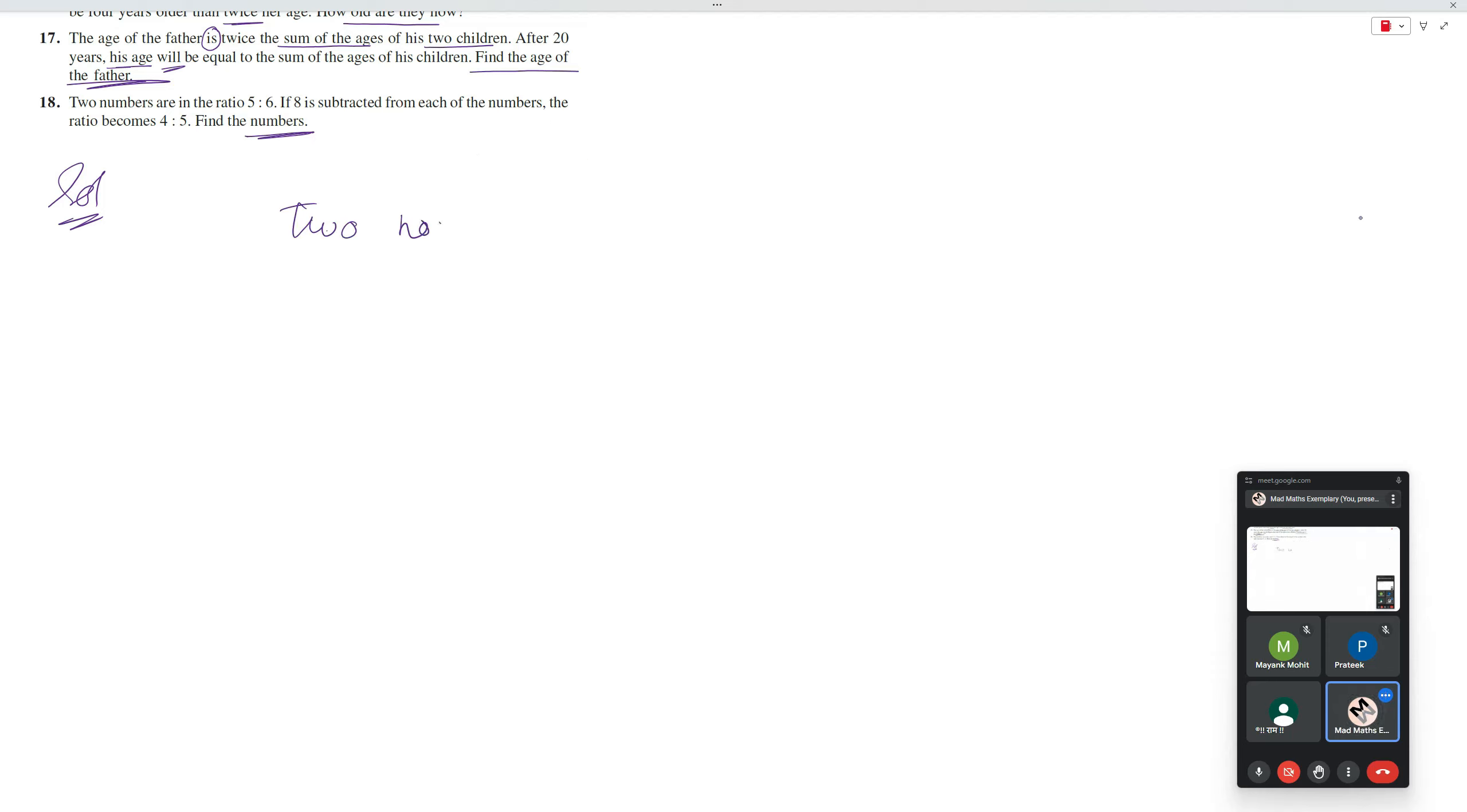Abhi tink middle school me, ki jab bhi aapko ratio dhe rakhha ho ta hai to us me aap lethe ho common multiplier. Yaha pe aagar me x and y na leke sirf ek variable leta ho, usse bhi kam ho jayega. Two numbers, yin ka ratio 5 is to 6 hai, mtlap 5 into 1 is to 6 into 1.